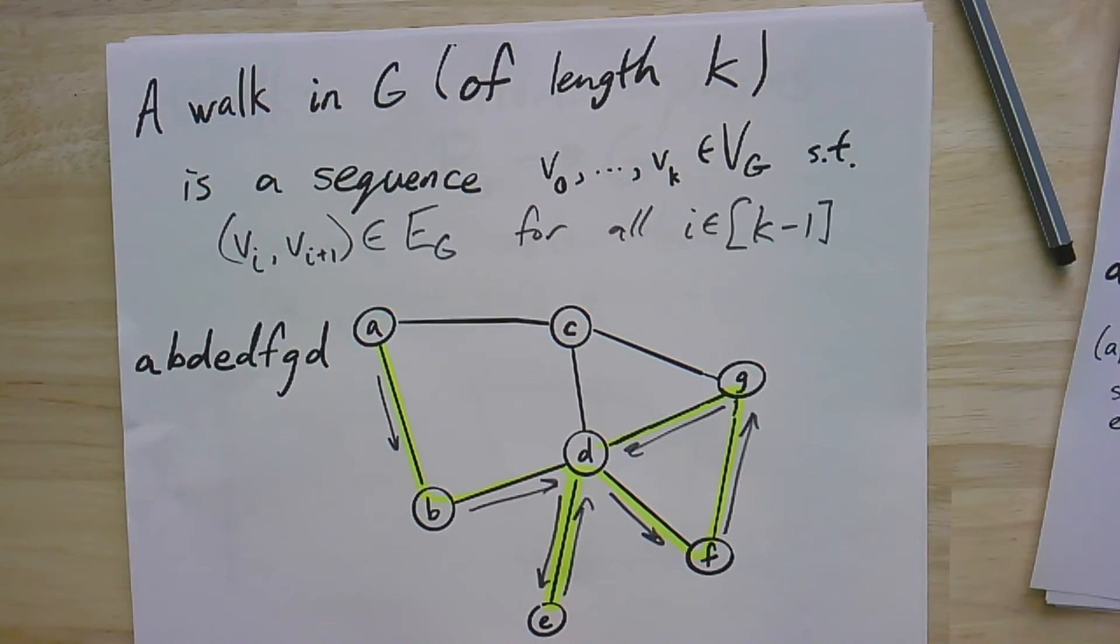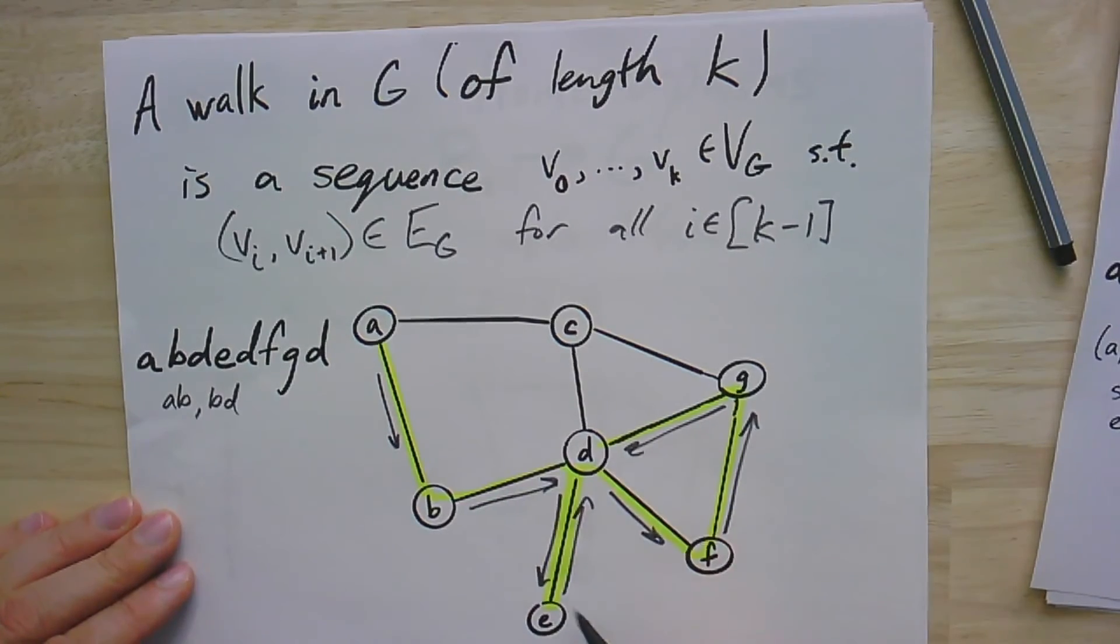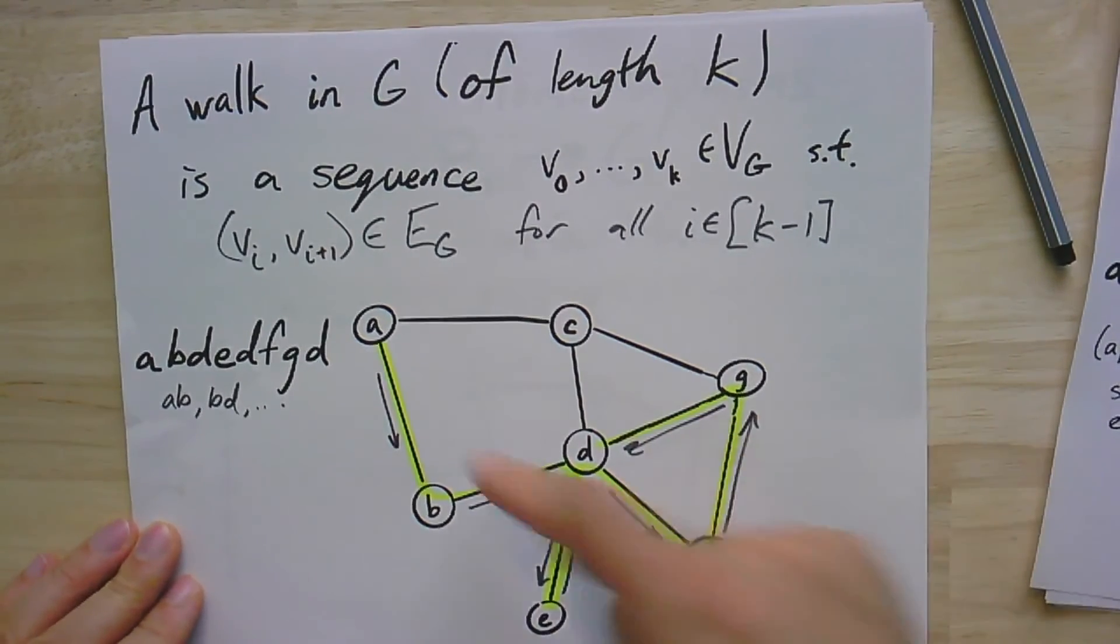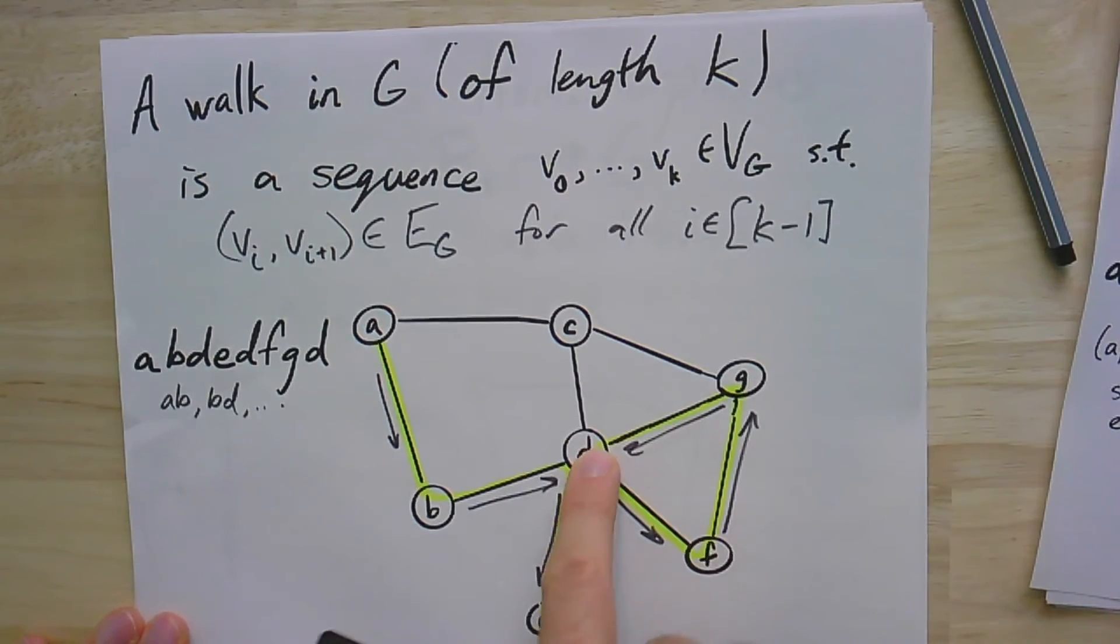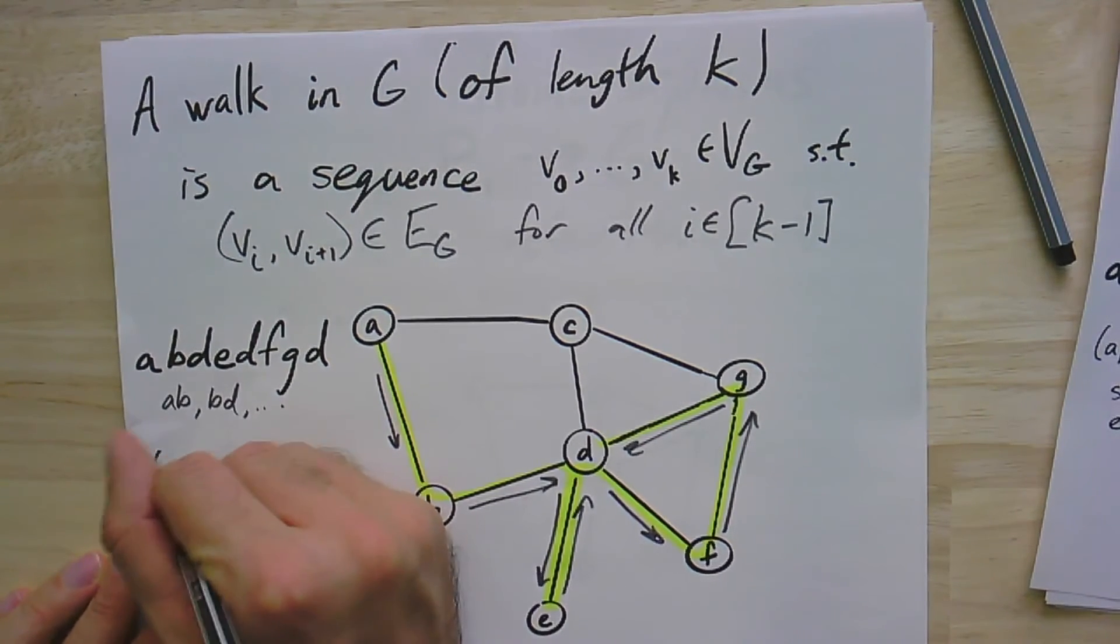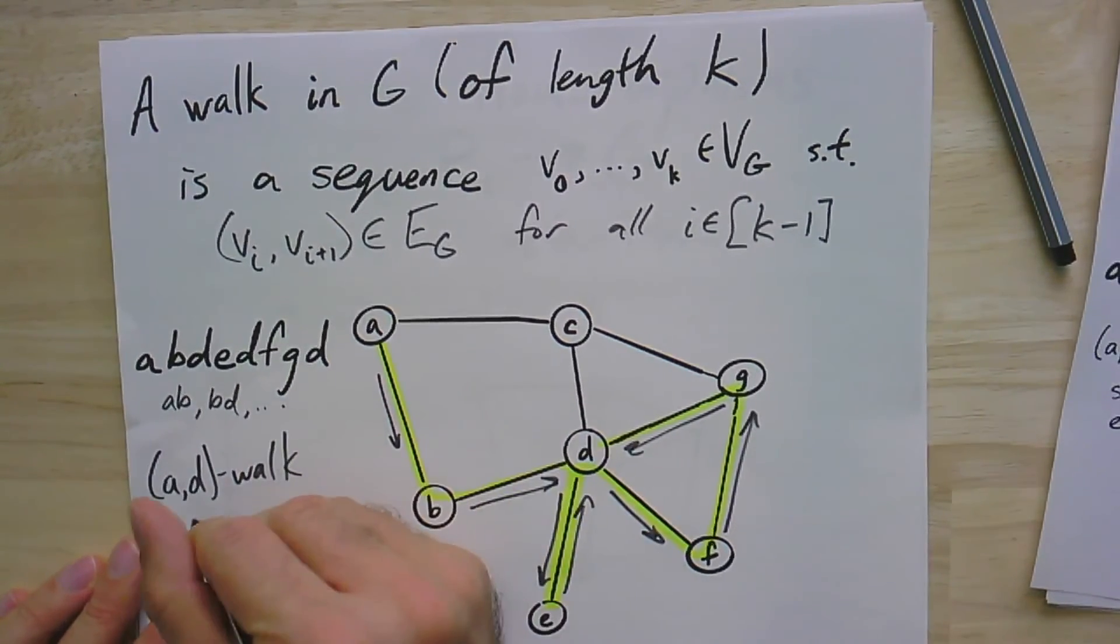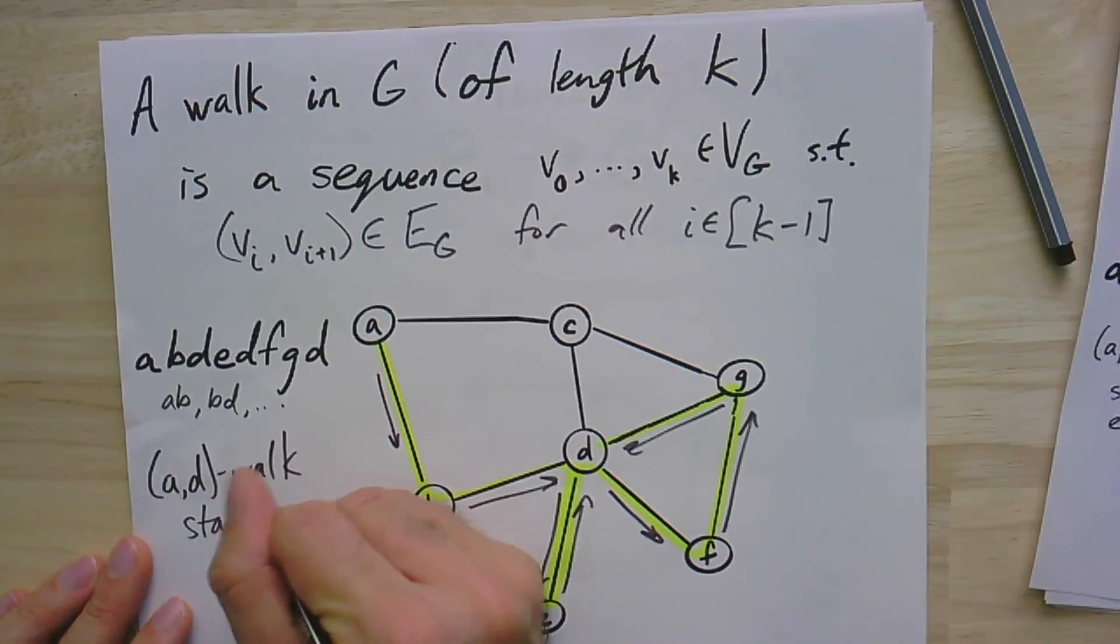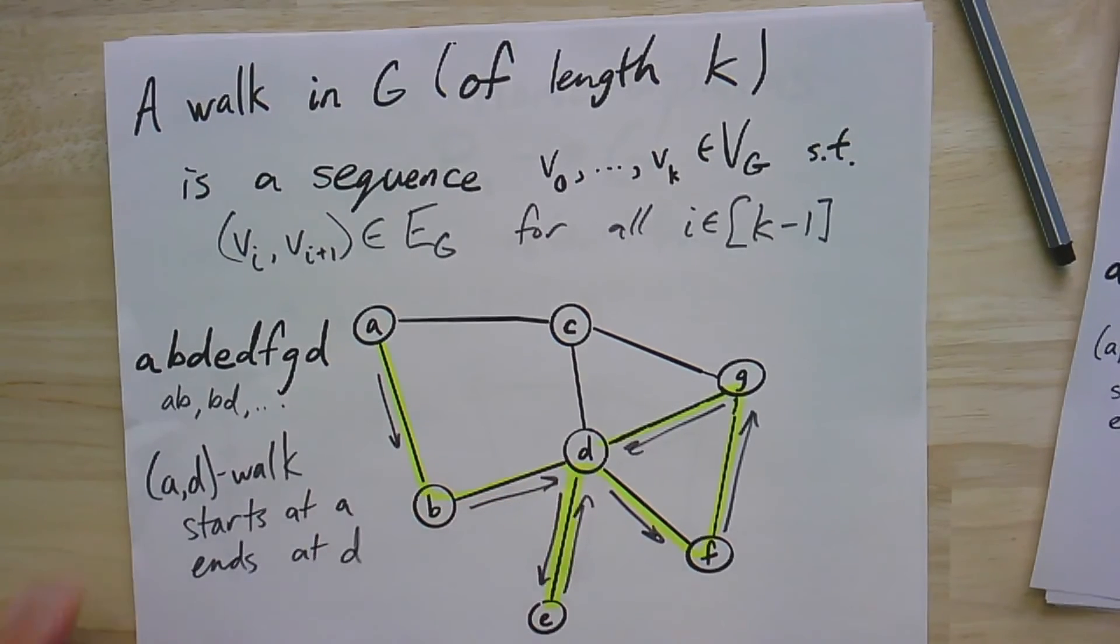We would have to check that it really was. We would check that a, b was an edge and b, d was an edge. I actually did do that manually as I walked around the graph. You can think of my finger as taking the walk. As I go vertex to vertex every time I make a jump, I better be going along an edge. Specifically, we're going to call this kind of walk an a, d walk because it starts at a and ends at d. So that is a walk in a graph.